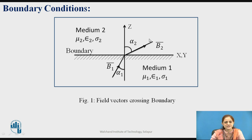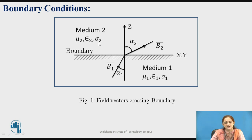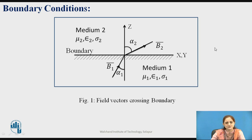Consider the field vectors crossing this boundary. The X-Y plane is the boundary and Z is the axis. One medium is considered as medium 1 and another as medium 2. Medium 1 has parameters μ₁, ε₁, and σ₁ — that is permeability, permittivity, and conductivity. Similarly, medium 2 has μ₂, ε₂, and σ₂. The boundary is the separation between these two media. When an electric field line passes from medium 1 towards medium 2, it makes an angle α₂ in medium 2 and angle α₁ in medium 1.